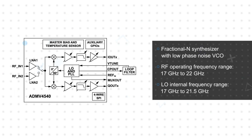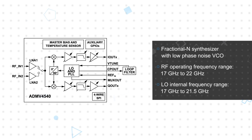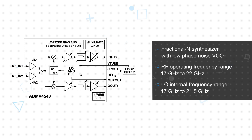The device provides continuous LO coverage from 17 to 21.5 gigahertz. The output of the LNA is down-converted to baseband using the IQ mixers. Each channel includes low-distortion programmable filters and variable gain amplifiers capable of rejecting large out-of-band interferers. The level of integration in the ADMV4540 offers great benefits in terms of BOM cost and board space savings traditionally accomplished through several discrete components.